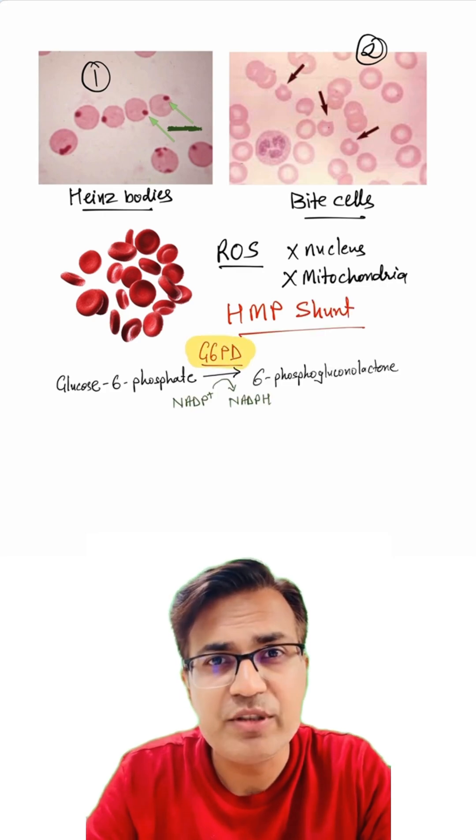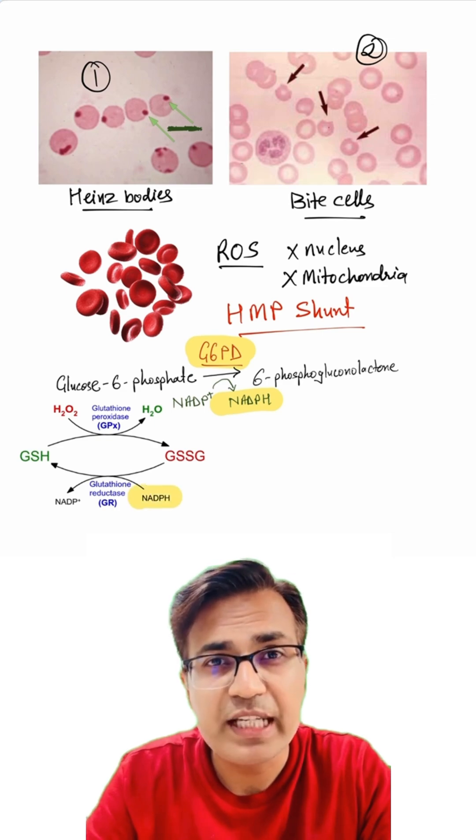Here glucose 6-phosphate dehydrogenase makes NADPH. This NADPH keeps glutathione in reduced form, the antioxidant shield that detoxifies free radicals.